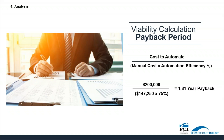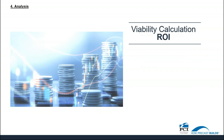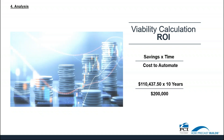Next, we'll look at the viability calculation for the return on investment. This calculation uses the calculated results contrasted with the cost to automate: savings times the period of time divided by the cost to automate. With savings of $110,437.50 over a 10-year period divided by the cost to automate of $200,000, the result is 552%, or 5.5 times, which is an annualized return of 18.63%.